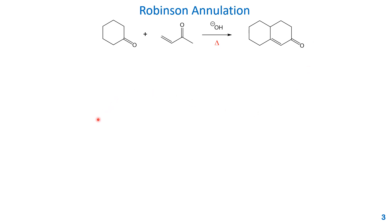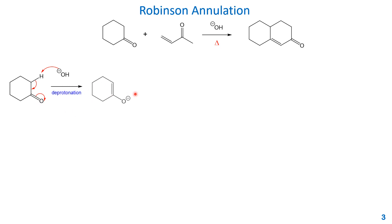Let's look at the arrow-pushing mechanism. The first step is the alpha proton of this ketone being deprotonated by the base — hydroxide takes the proton to form water. Then push the sigma electron back to form a pi bond here, and break this pi bond between carbon and oxygen; the electrons stay with oxygen to form the enolate. The enolate is the nucleophile.